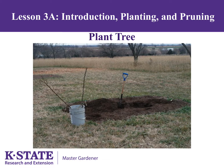Next, plant the tree. Watch the depth of planting — the graft should be above ground level. If the graft is below ground, the top part of the tree may develop roots, which may allow the tree to grow much larger than you would like. Fruit trees are often grafted onto dwarfing rootstocks, which keep the tree smaller than they would normally be. We will talk about dwarfing rootstocks later.